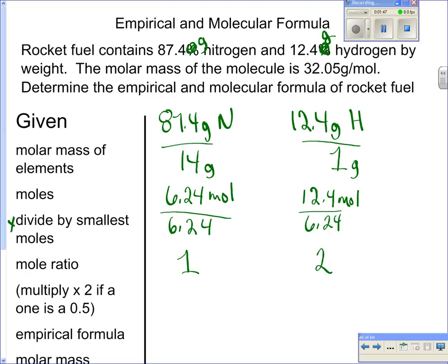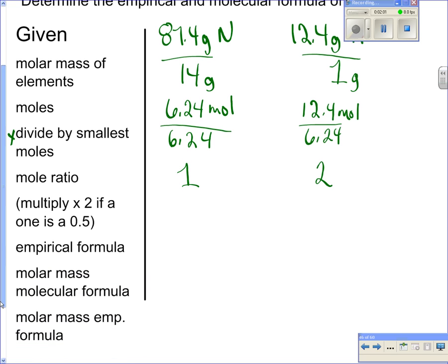So then I need to look, does either one, and make sure that when you divide these out, that you do not round too much. If it ends up being like a 0.00 or a 0.99, then you can round it. But if it's a 0.5, you need to leave it, and then we would just multiply everything by 2.